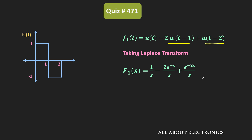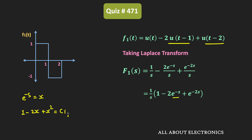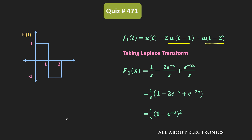So we can say that F1(s) = (1/s)(1 - 2e^(-s) + e^(-2s)). If we let x = e^(-s), then this expression becomes (1/s)(1 - 2x + x²), which equals (1/s)(1 - x)². Therefore, F1(s) = (1/s)(1 - e^(-s))².